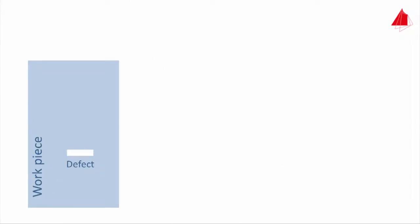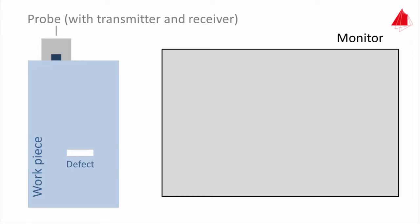In pulse echo mode, a transducer installed in a probe performs both the sending and receiving of the ultrasonic pulse. On a computer monitor, the intensity is plotted upwards on the y-axis and the time towards the right on the x-axis.